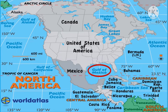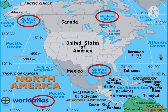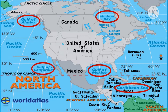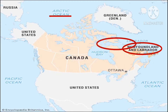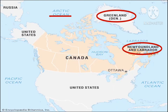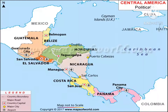A number of small water bodies are found here, for example the Gulf of Mexico, the Hudson Bay, the Gulf of Alaska, the Gulf of California, and many more. Newfoundland is found to the east of Canada. A number of islands lie in the Arctic Ocean, of which Greenland is the largest. The land lying between South and North America is called Central America.